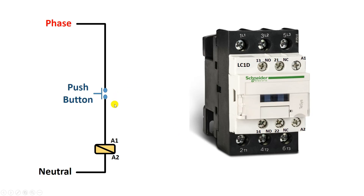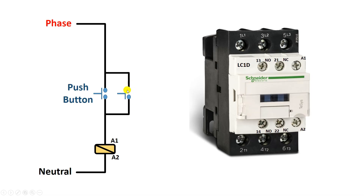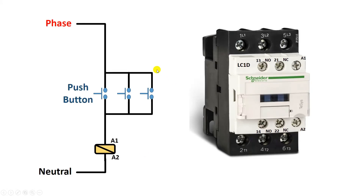If you want to turn on the contactor from two places — one push button here, by pressing this you can turn on the contactor, and you have one more push button by which you also want to turn on the contactor — then how to do the wiring. If you want to turn on the contactor from different places, with the first push button connect another push button in parallel. From the upper terminal, provide input power supply to this push button, and connect a wire from its output terminal to the output terminal of the first push button. Overall, connect another push button in parallel to the first. By doing this, phase supply will be at both input points. Press any one of the two push buttons and the power supply will go to the contactor and it will be turned on. For one more push button, connect it in parallel in the same way.